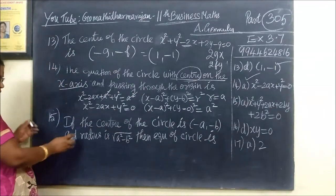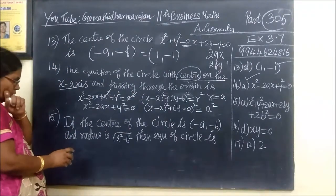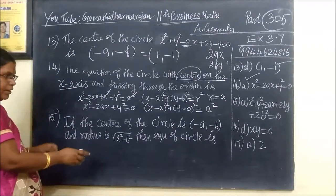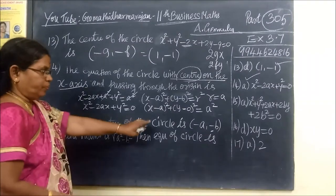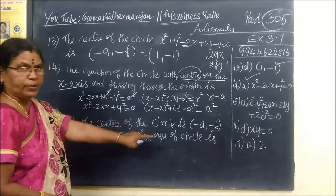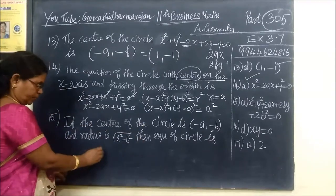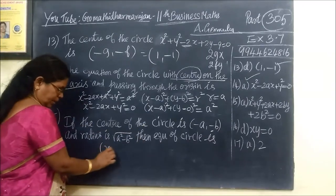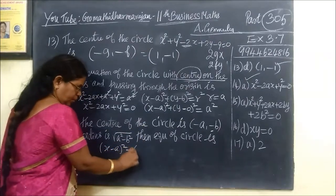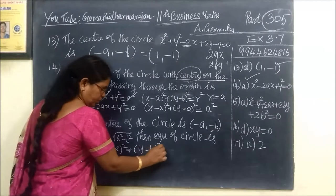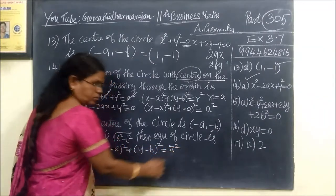Coming to the next question: if the center of the circle and radius are given, the formula is (x - a)² + (y - b)² = r².